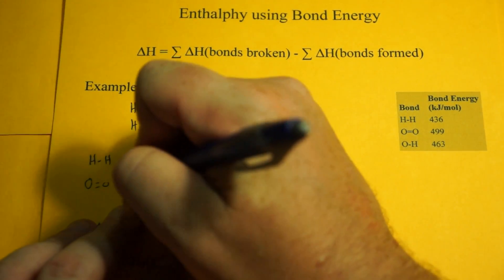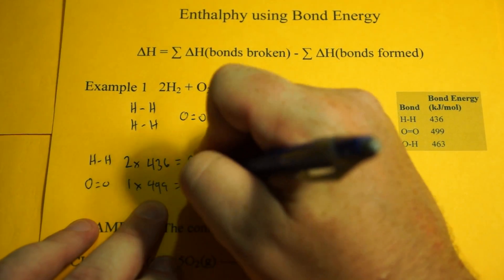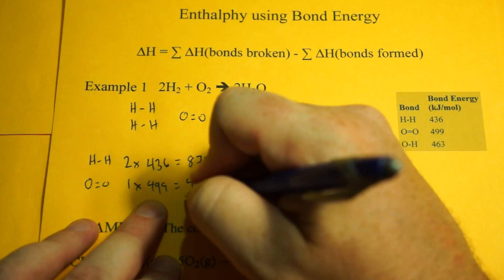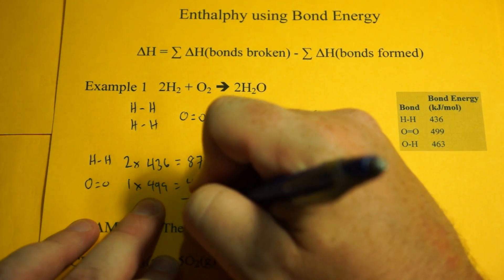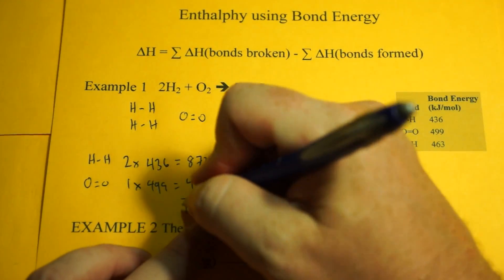And then oxygen with the double bond, we have one of those, and oxygen is 499. And this adds up to, let's see, 1,371. That's the energy to go in. That's the positive part.